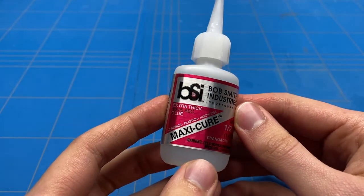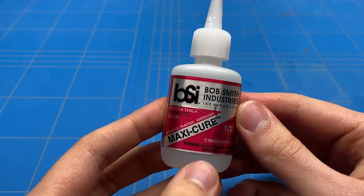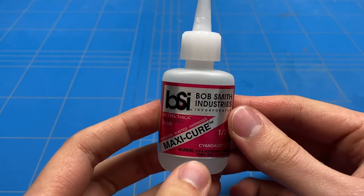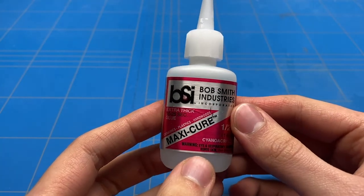Sometimes when using super glue, in this case Bob Smith Industries Maxi-Cure, you're gluing some parts together and it isn't really drying as fast as you want.